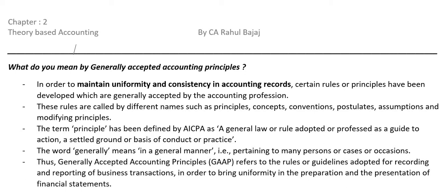What is GAAP? In order to maintain uniformity and consistency in accounting records, certain rules and principles have been developed, which are accepted by the accounting profession in respective countries. For India it is Indian GAAP, for US it is US GAAP. Now we are moving to the next level — worldwide GAAP, which is called IFRS, International Financial Reporting Standard.